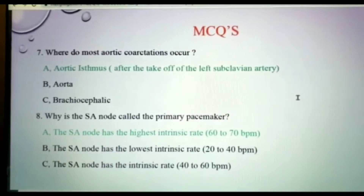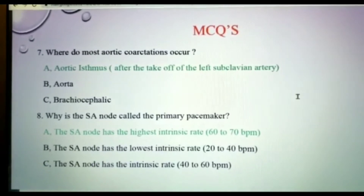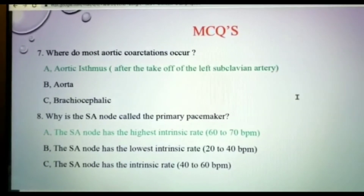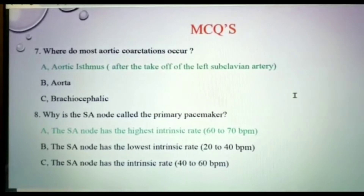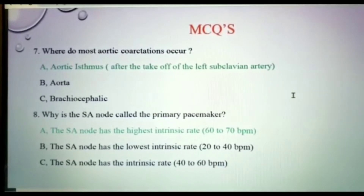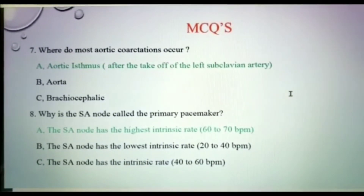Where do most aortic coarctations occur? The area called the aortic isthmus is where most aortic coarctations occur. It is just after the left subclavian artery.